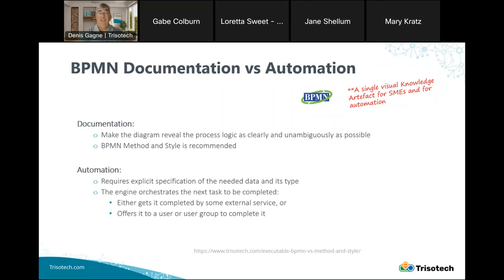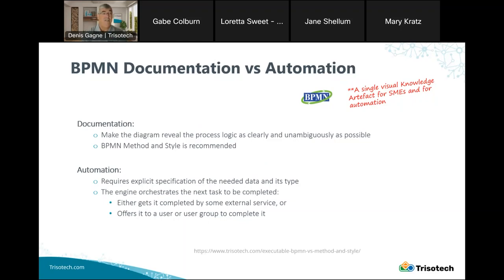BPMN is both for documentation and automation — so what's the difference? When modeling for documentation, your goal is to make the diagram as unambiguous and clear as possible in specifying the logic of the process. We recommend the BPMN Method and Style approach promoted by Bruce Silver — there's a series of books on Method and Style to help ensure your BPMN model communicates everything you intend. When looking at automation, it requires explicit specification of the data and their types, which may not be needed for documentation but is certainly needed for automation modeling.